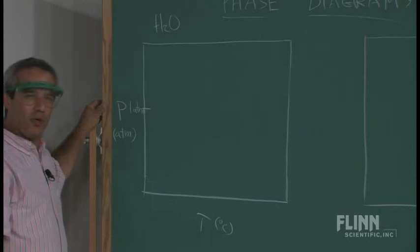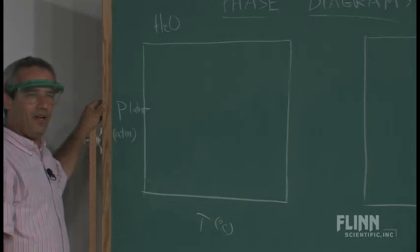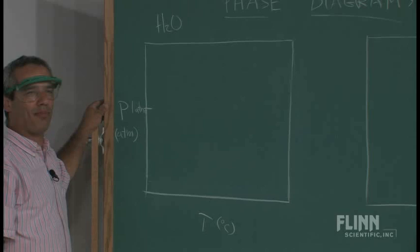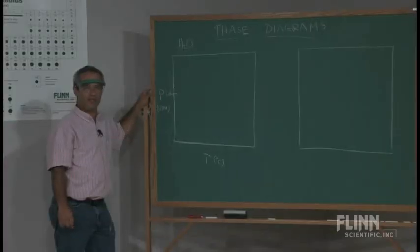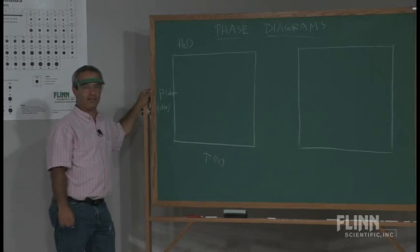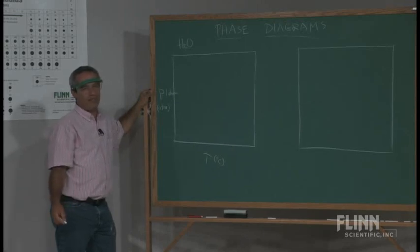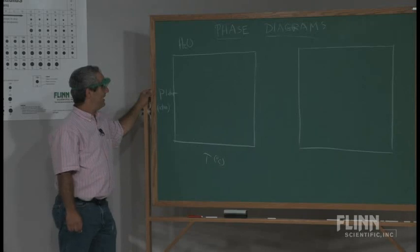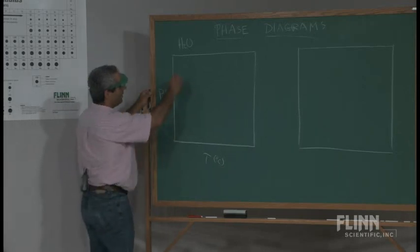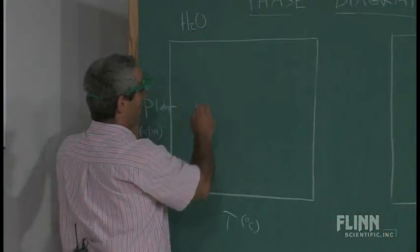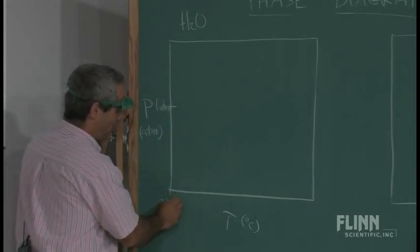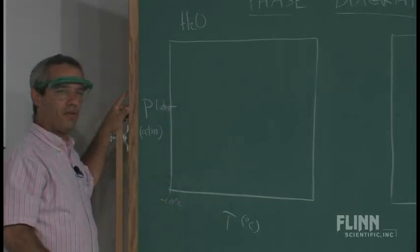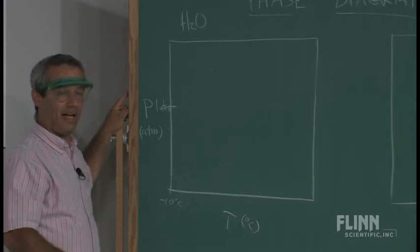One atmosphere, which we'll put right about here in the middle of our graph, map, phase diagram, that's the pressure we're most familiar with. We experience a whole range of different temperatures on this planet, but not very much in the way of different pressures. We pretty much live our whole lives at one atmosphere. If we had a sample of H2O at one atmosphere, and we'll start at, let's say, negative 10 degrees Celsius, what would be the most stable phase? Well, obviously solid.